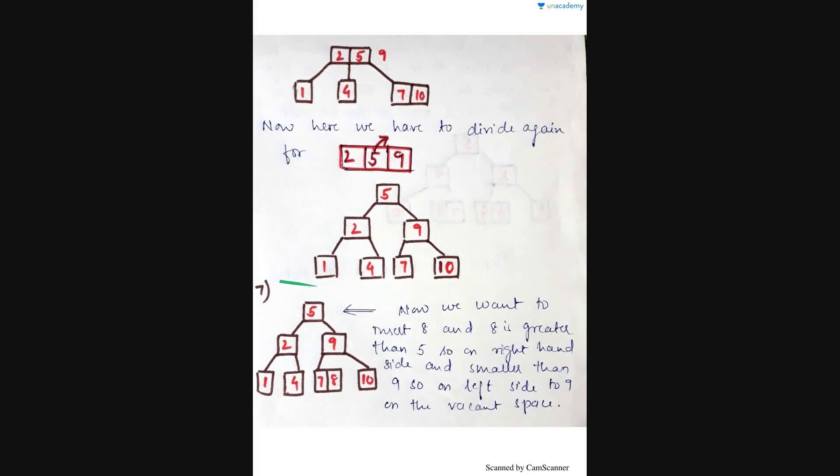Then 1 is smaller than 2 so on the left, and 4 is greater than 2 so on the right. Now after this I want to insert 8. Since 8 is greater than 5 it goes right, but smaller than 9 so it goes left of 9. On that left side only 1 key node is filled with 1 more still vacant. So I arrange in ascending order, place it there, and the insertion of 8 is completed.